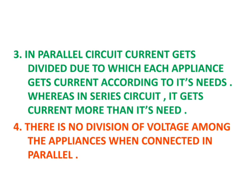The fourth advantage is that there is no division of voltage among appliances when connected in parallel. If the refrigerator and fan are connected in series and total voltage is 220V, the voltage divides between them — each gets less than 220V and they won't be able to run properly. But if connected in parallel, both the fridge and fan each get 220V independently, so there is no problem in running them.